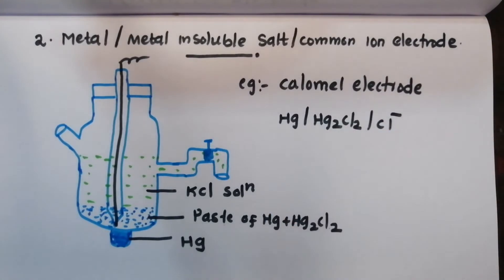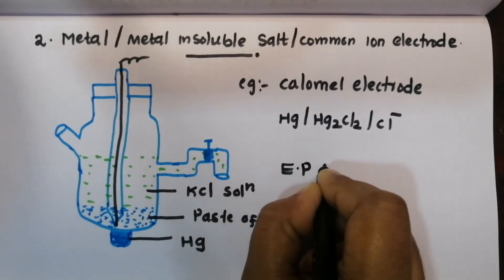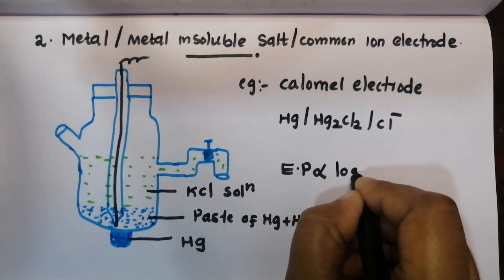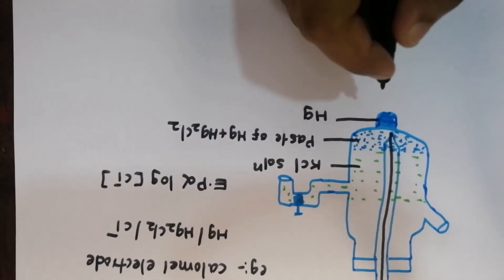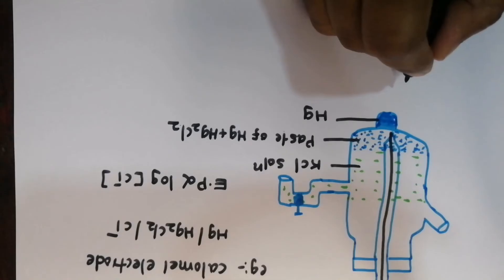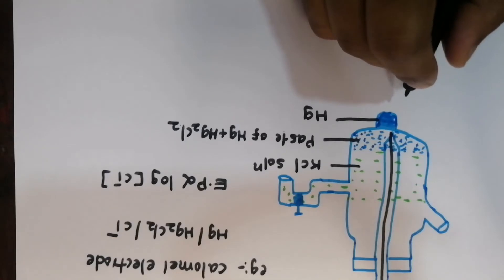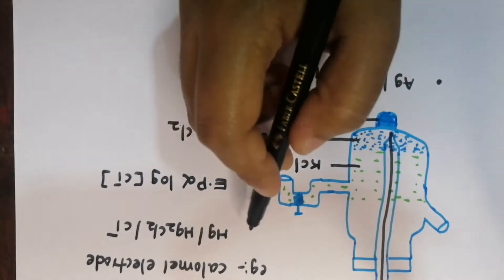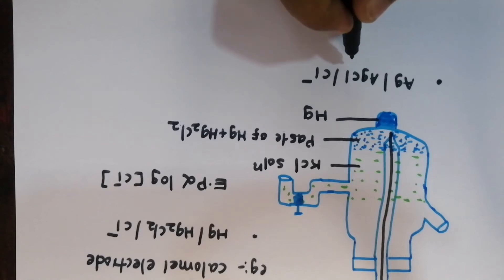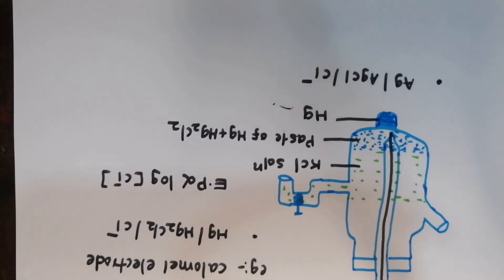Mercurous chloride provides the common ion Cl⁻. We represent this as Hg | Hg₂Cl₂ | Cl⁻. The electrode potential depends on the logarithmic concentration of the common ion Cl⁻. A similar example is the silver/silver chloride electrode, where silver is in contact with silver chloride, further in contact with KCl solution. Here too, electrode potential depends on the logarithmic concentration of the common ion.